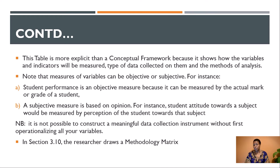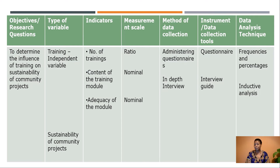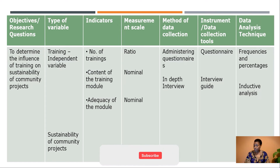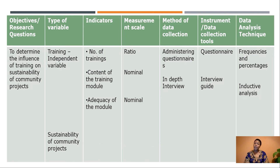In Section 3.10, the researcher draws a methodology matrix table, and we have an example of one which has seven components. The components are: either an objective or a research question, the type of variable, the indicators, the measurement scale, the method of data collection, the data collection instrument, and the data analysis technique. For this particular research study, one of the objectives was to determine the influence of training on sustainability of community projects. This objective has two variables: an independent variable which is training, and a dependent variable which is sustainability of community projects.